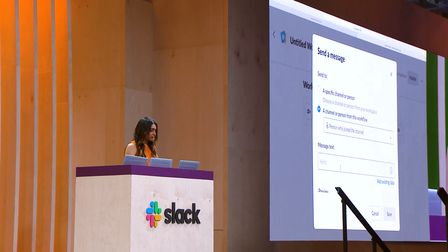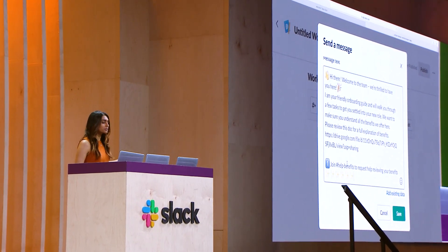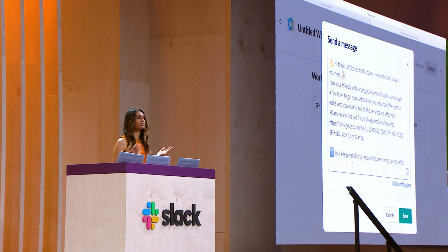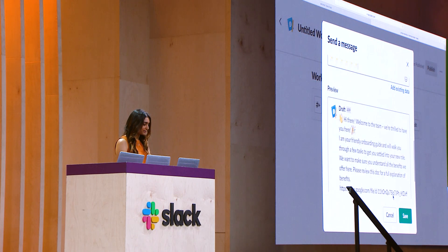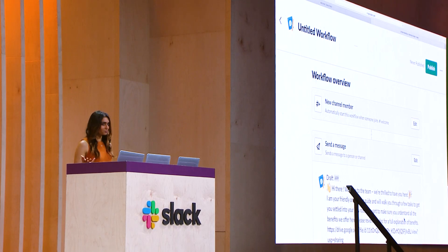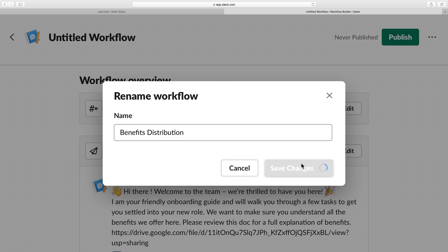I'm going to go ahead and craft my message. All I'm doing is providing them a link to the latest version of the benefits, as well as pointing them to a channel they can go to if they want to talk to our HR team for more help. Once this looks good, I can preview it at the bottom and click to save. Pretty simple — we just created our first workflow together. Now I'm going to rename it the benefits distribution workflow and click to save.